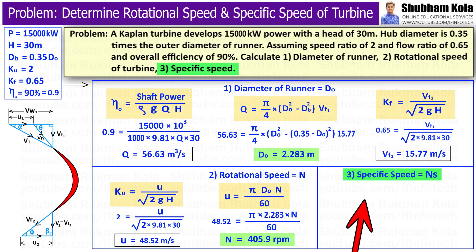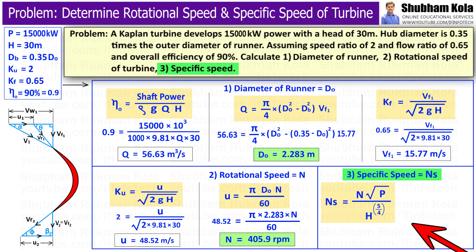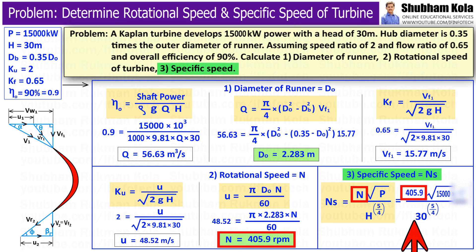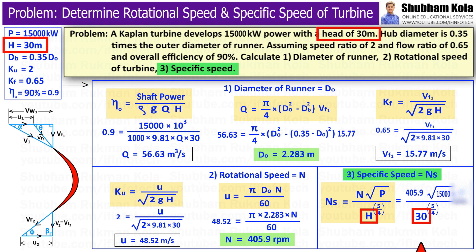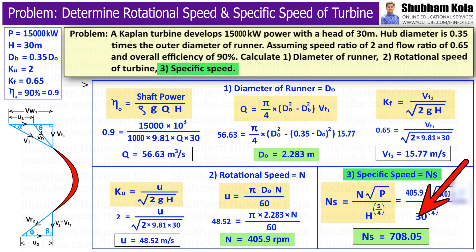To calculate specific speed, we use the specific speed formula with shaft power, the calculated speed N, and head of 30 meters. Substituting all these values, we get specific speed equal to 708.05.